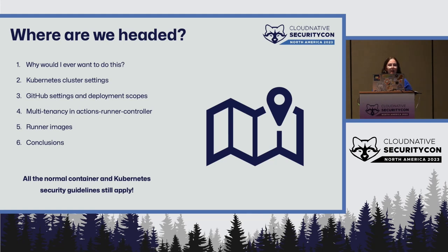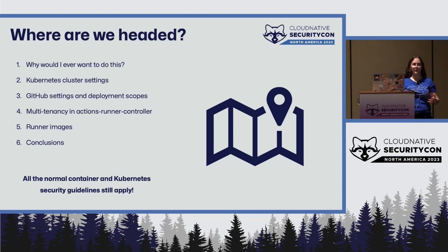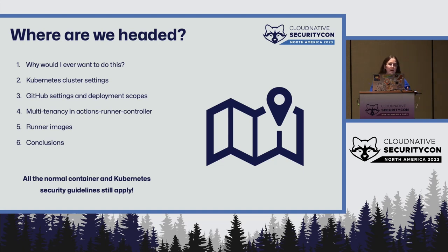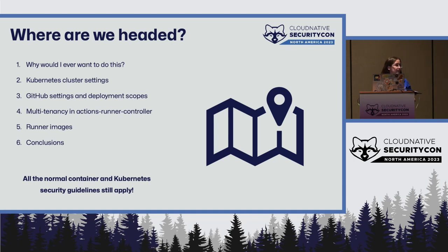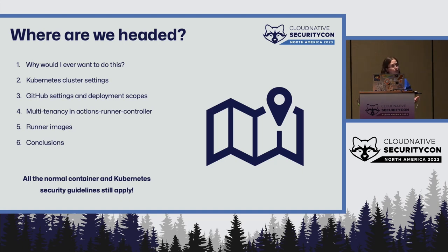Here's where we're headed: first, why on earth would you ever do this when GitHub Actions already has magic done for you? We'll talk about Kubernetes cluster settings, GitHub settings and deployment scopes, how multi-tenancy works with Actions Runner Controller, and runner images, ending with conclusions. I'm very sorry if you came expecting one YAML file to make you completely unhackable — that's not how any of this works. However, this is where I've seen problems, weird edge cases, and security not being considered as companies start to adopt this.